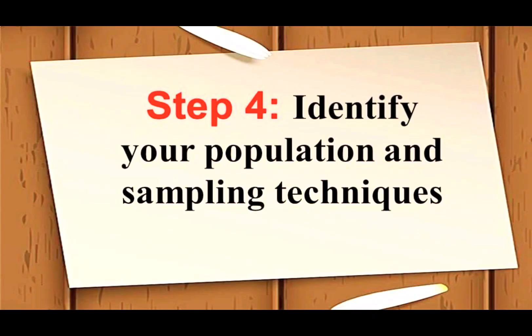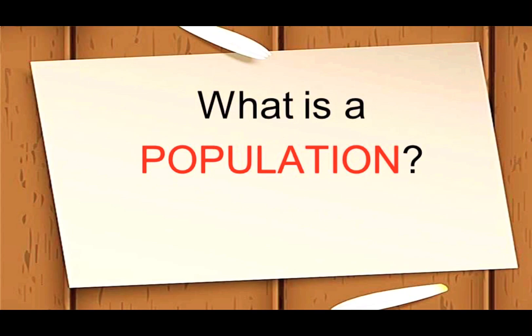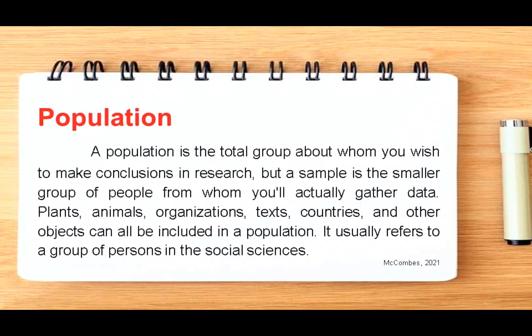Step 4: Identify your population and sampling techniques. Your research design should specify who or what your study will focus on, as well as how you will select your participants or subjects. A population is the total group about whom you wish to make conclusions in research, but a sample is the smaller group from whom you will actually gather data. Plants, animals, organizations, texts, countries, and other objects can all be included in a population — it usually refers to a group of persons in the social sciences.